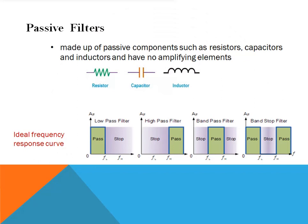In this tutorial we will focus on passive filters. Passive filters are made up of passive components such as resistors, capacitors and inductors and have no amplifying elements like transistors or op-amps. Therefore there will be no signal gain and the output level will always be less than the input.